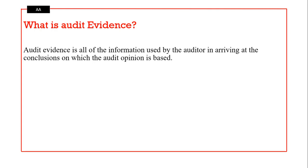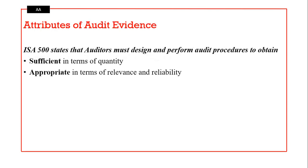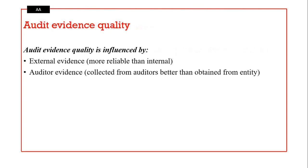Gathering audit evidence is crucial because it minimizes, to some extent, the risk of issuing an inappropriate audit opinion. Audit evidence refers to all the information used by the auditor in arriving at the conclusion on which the audit opinion is to be based. Audit evidence must be sufficient — that is in terms of quantity — and it should be appropriate, that is in terms of relevance and reliability, in order to persuade our audience.